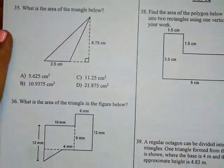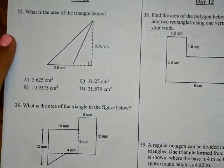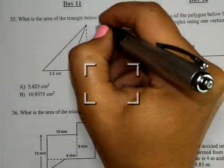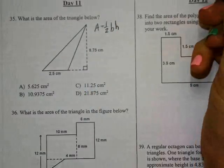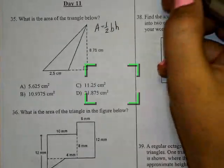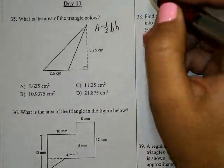All right, question 35. What is the area of the triangle below? Well, the formula for the area, as it states on your reference sheet, area equals one-half base times height. It is very important you write the formula every time.